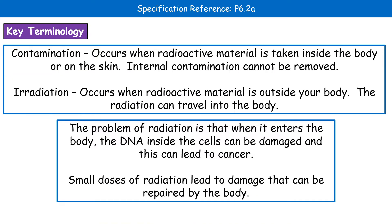We do need to know these two key terms and their definitions, because they have had a question in the past asking you to explain them: contamination and irradiation. When we talk about contamination, this is radioactive material inside your body or on the skin. This is problematic because if it's internal contamination — so you've swallowed some radioactive material — we can't remove that, and it's going to be detrimental to your health in a significant way.